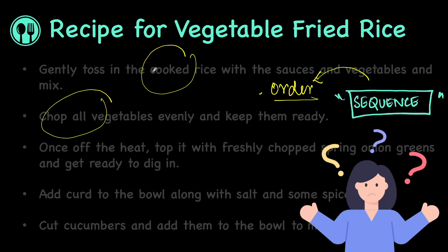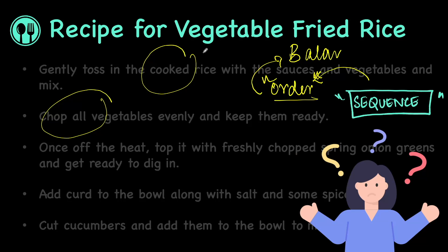Now in cooking, the order or sequence matters because that is what helps us get a good dish at the end of the day. But even in nature, we see that there is a certain order — and in nature's case, this order is needed to maintain balance amongst living organisms.